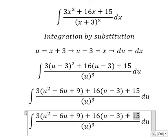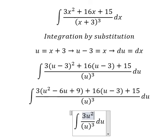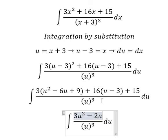Now we need to simplify this one. So we have 3u² minus 2u minus number six.